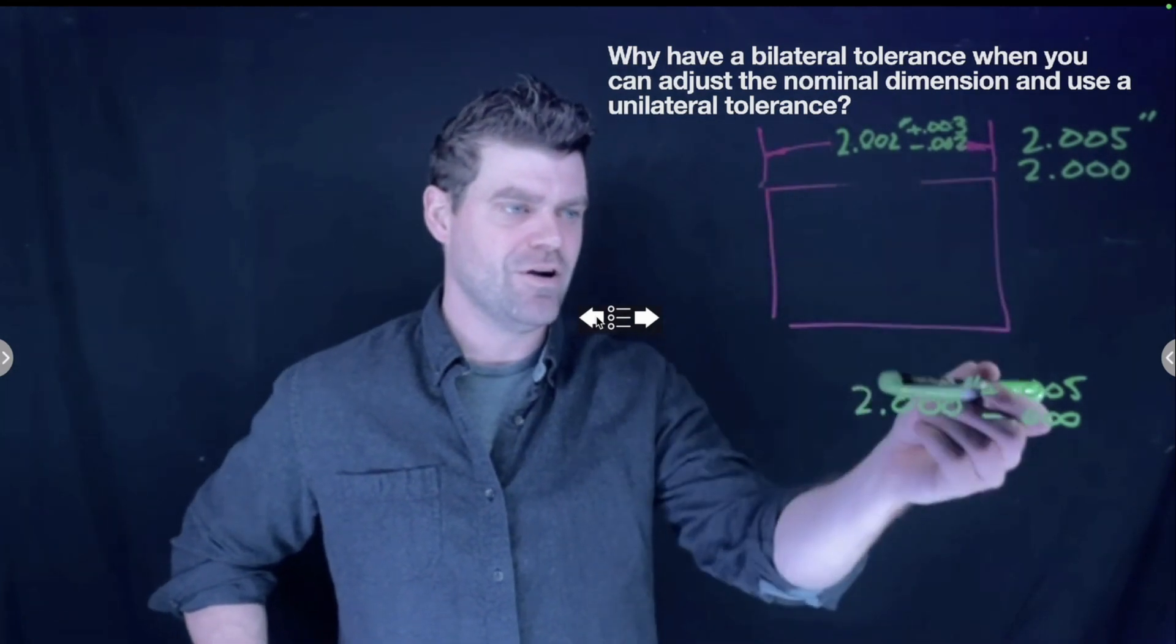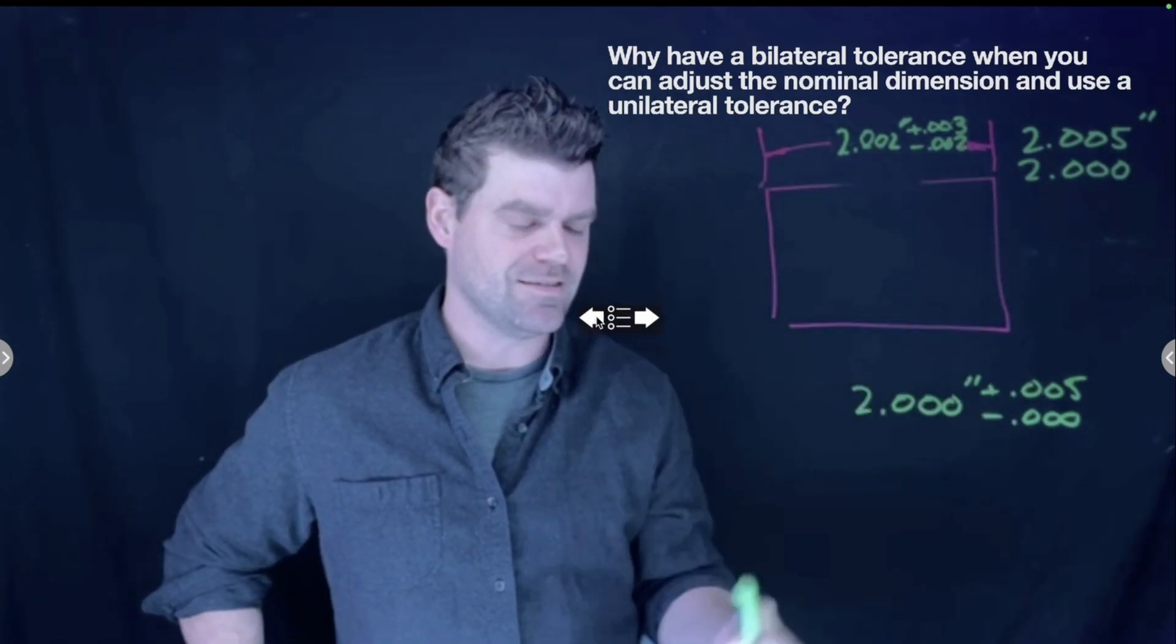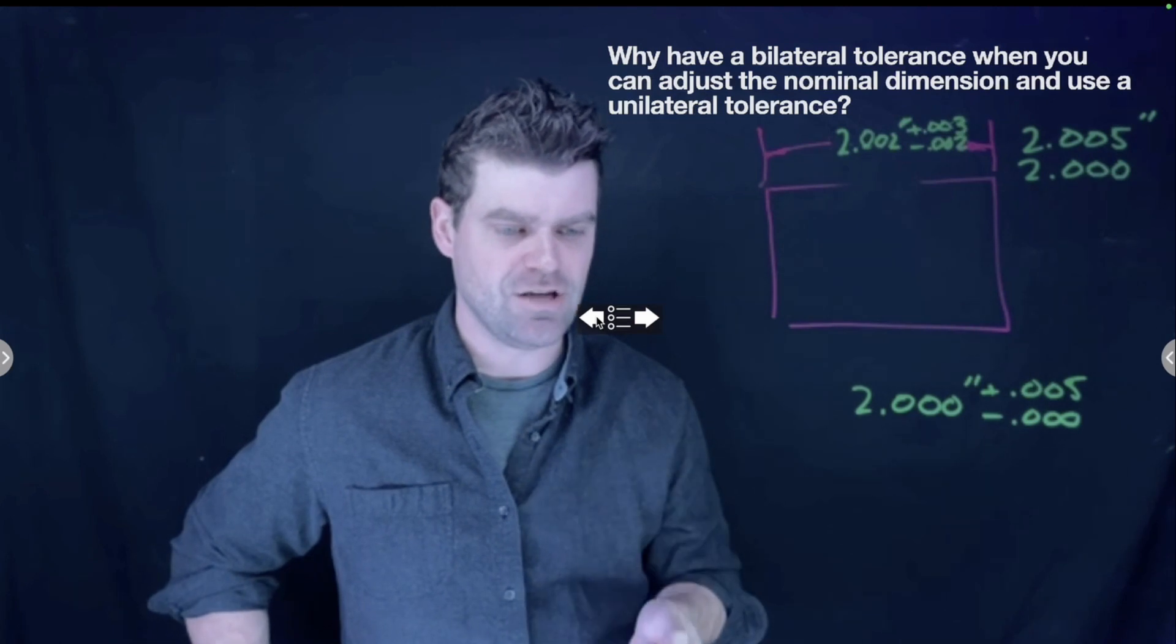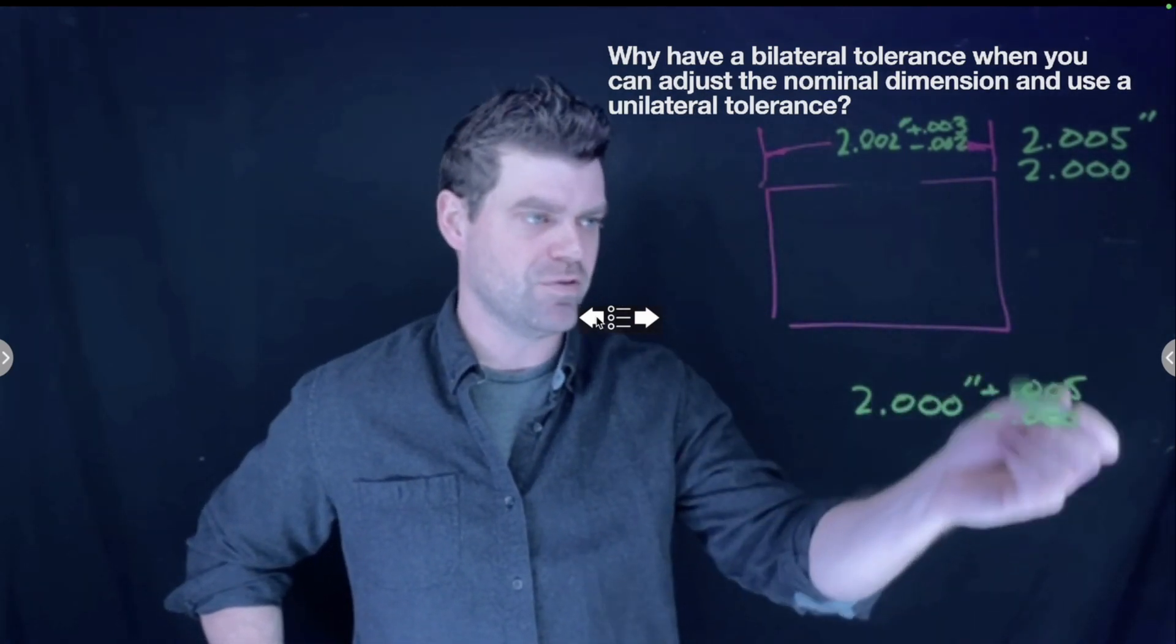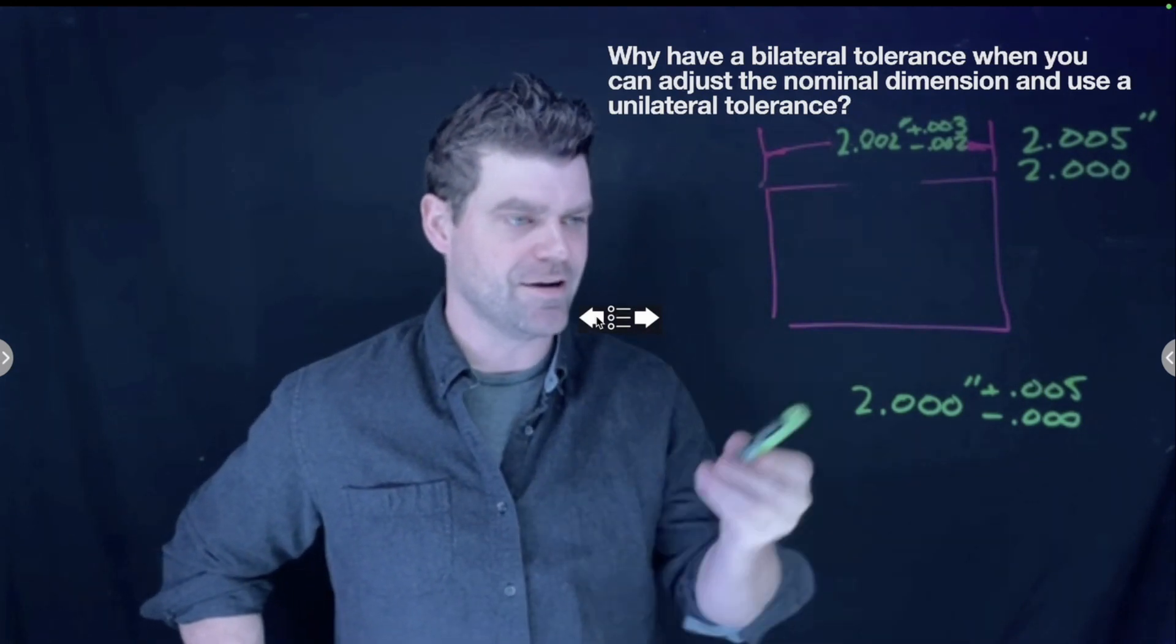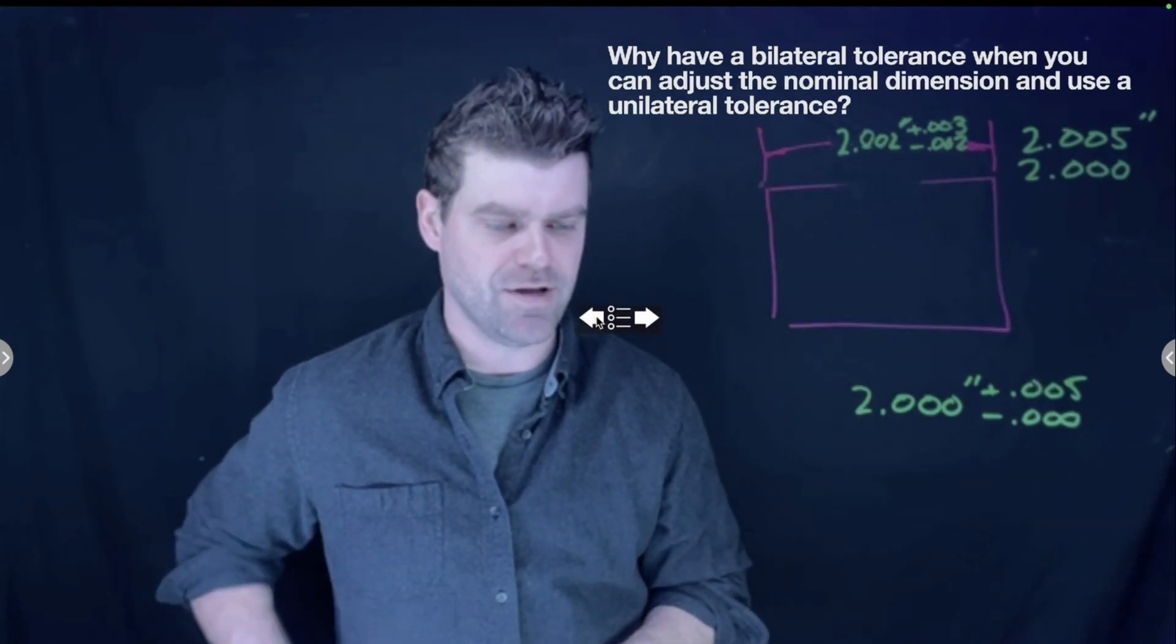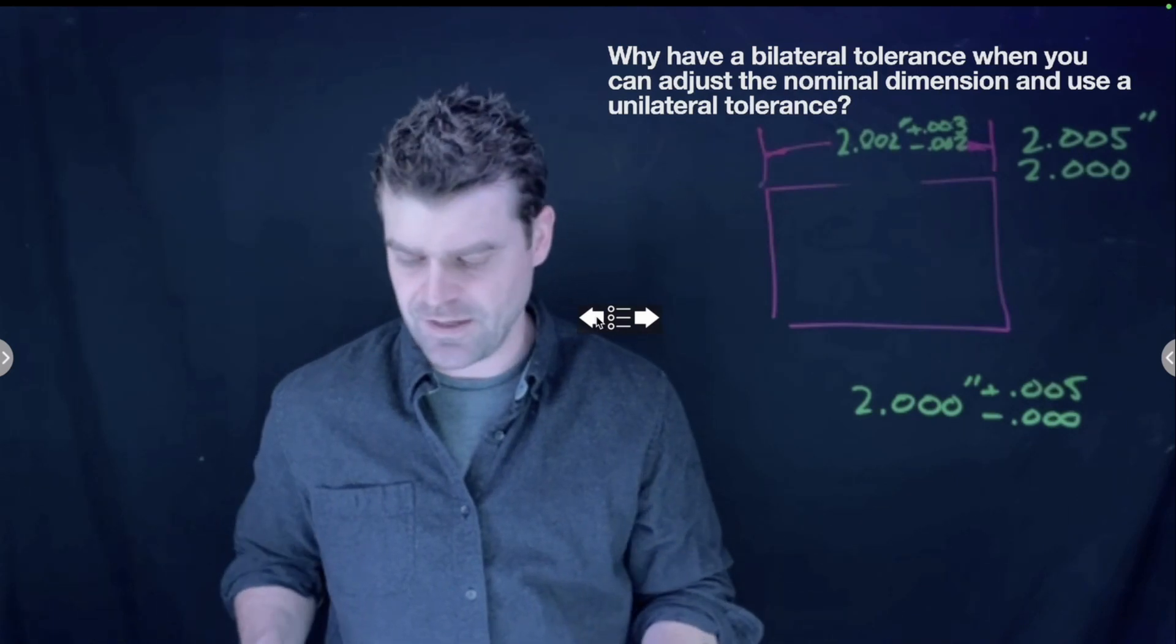Whereas this part, they're going for two inches and two thou plus or minus. So for this application, they're actually going to be shooting for the two inches and two thou. They're not going to be shooting for two inches exactly. So that nominal dimension is the size that we're looking to achieve, and then we're varying from that.